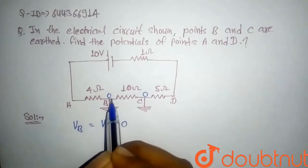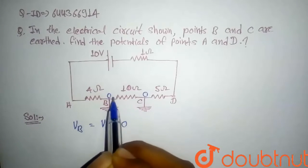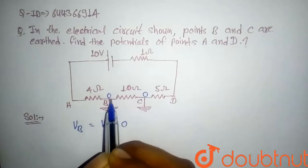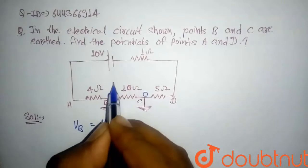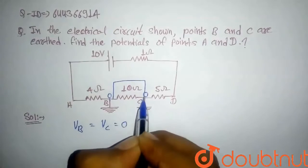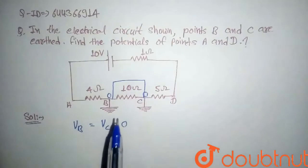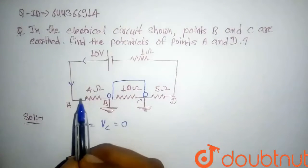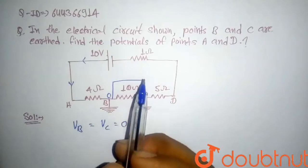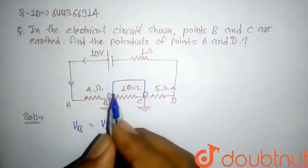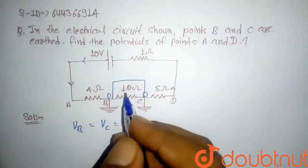Now this is for same potential here across the 10 ohm resistance, so no current flows through this 10 ohm resistance. We can assume this is short circuited. In the circuit, current flows through 4 ohm resistor, 5 ohm resistor, and 1 ohm resistance.